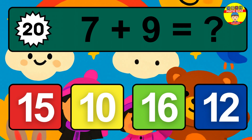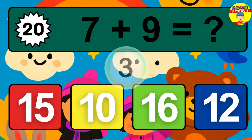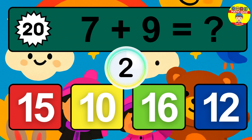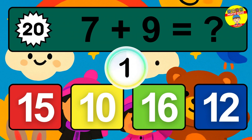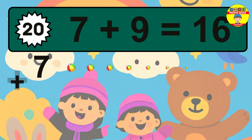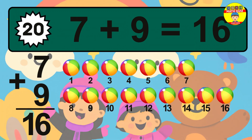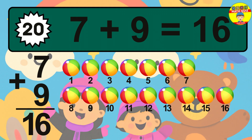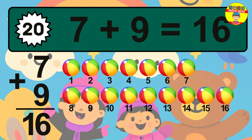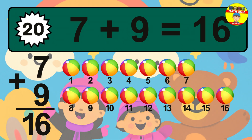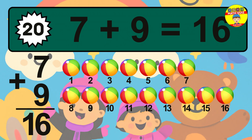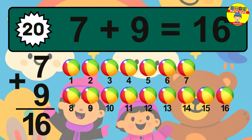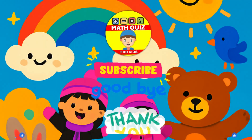Question 20. 7 plus 9 equals what? The answer is 7 plus 9 is 16. Let's count it: 1, 2, 3, 4, 5, 6, 7, 8, 9, 10, 11, 12, 13, 14, 15, 16.